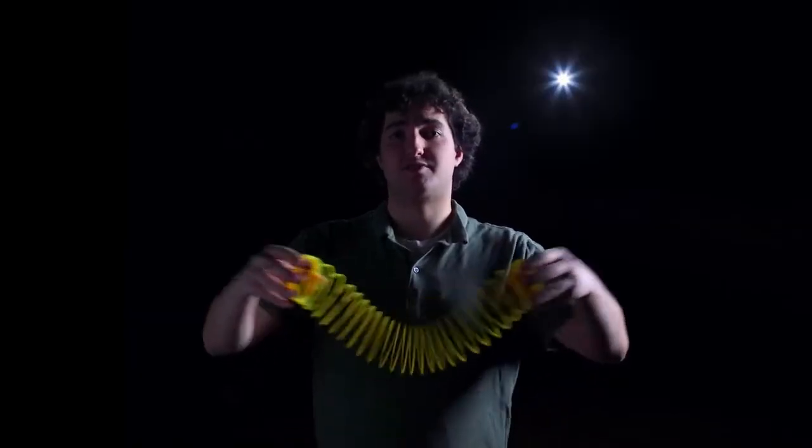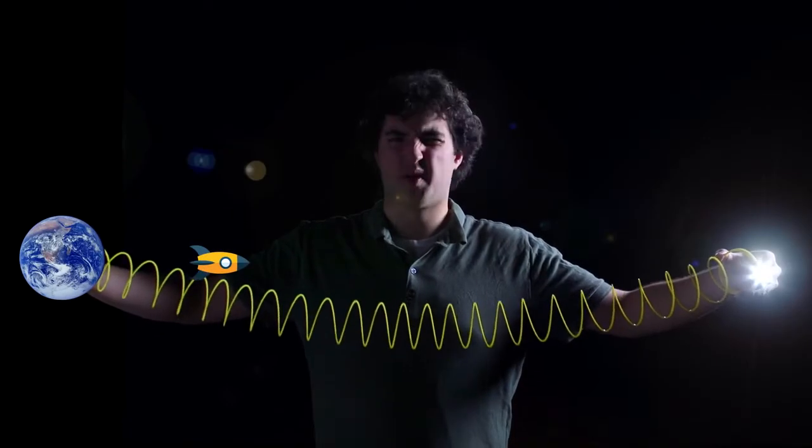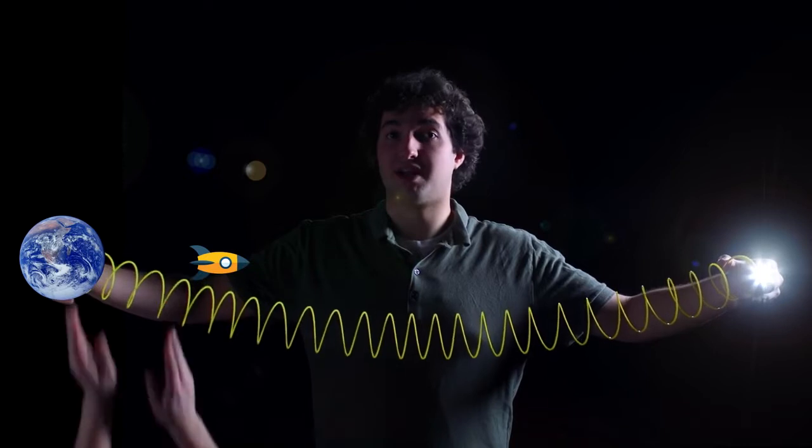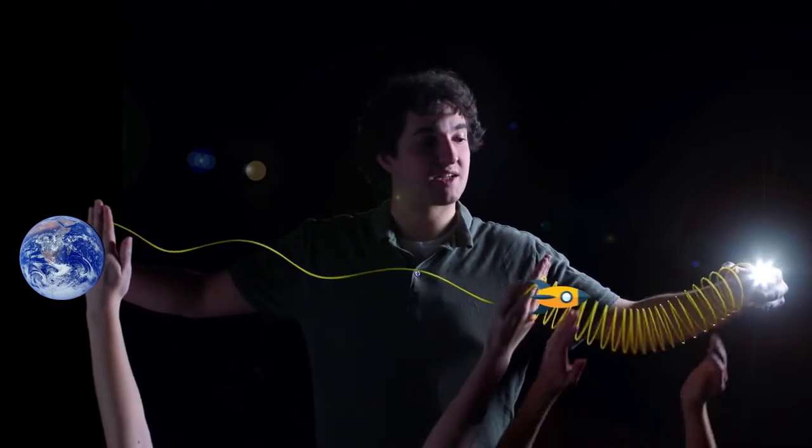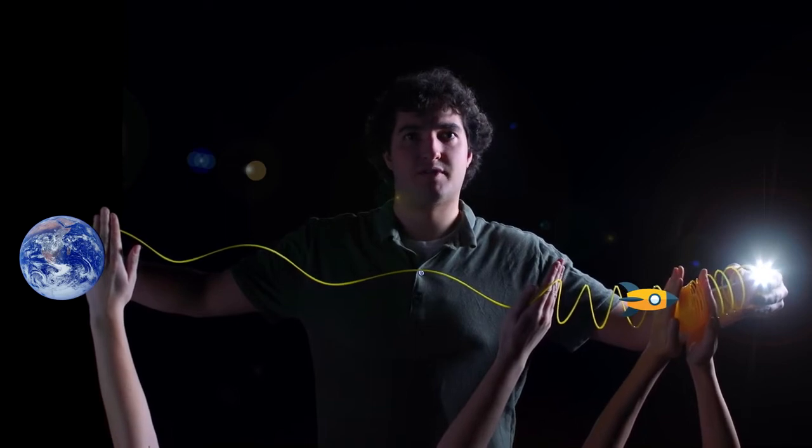If you take a slinky and stretch it out like this, it represents the space between Earth and the North Star, quite a ways to travel. But if we can somehow find a way to expand the space behind us and contract the space in front of us, then we've made it most of the way to the North Star without having moved hardly at all.